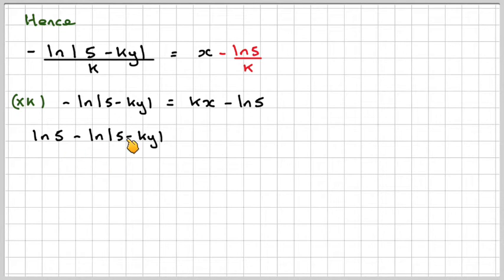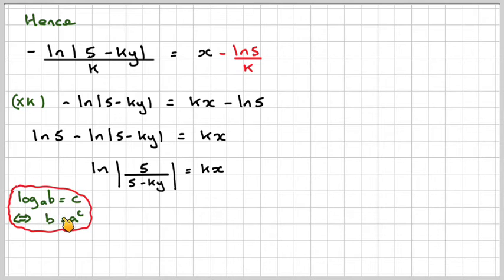Let's put all the things with ln on one side. So we're going to have ln of 5 minus ln of 5 minus ky equals kx. We can combine these as ln of 5 over 5 minus ky equals kx, and then using the idea that log a to the b is c, b will be equal to a to the c, then 5 over 5 minus ky will equal e to the kx.